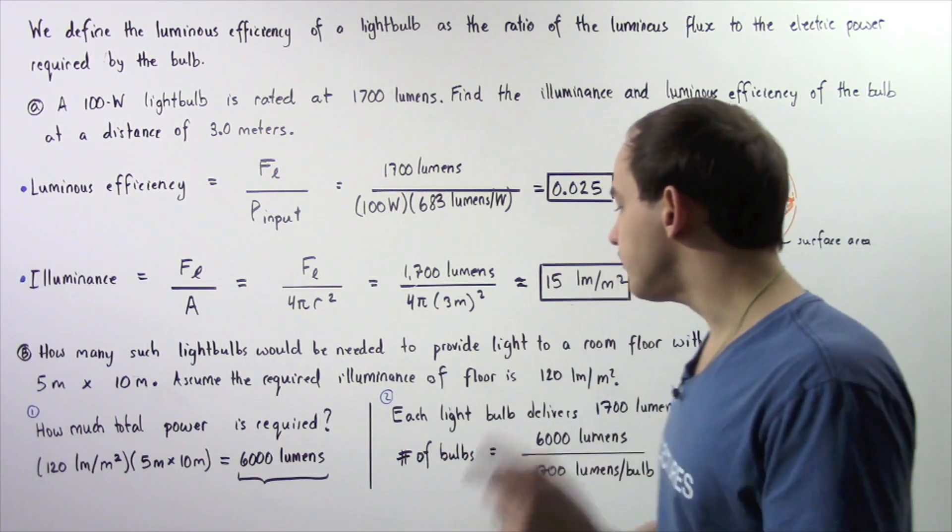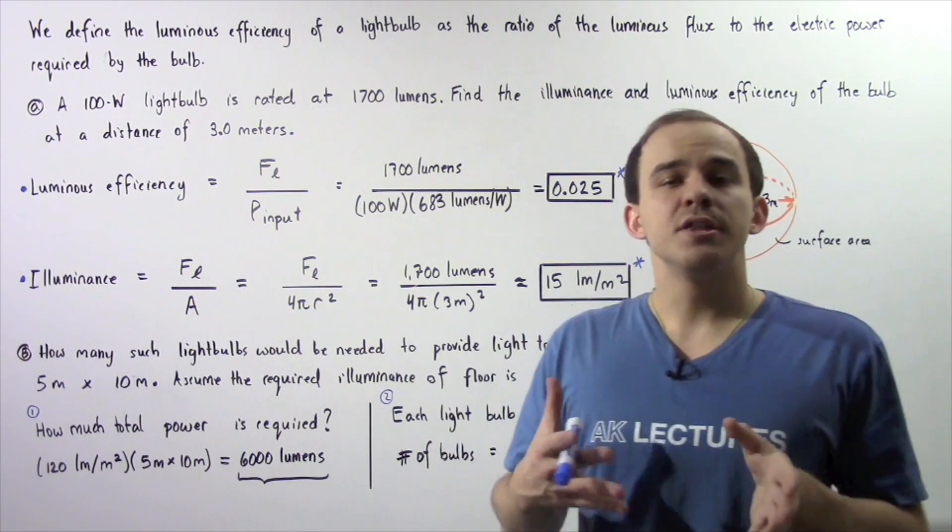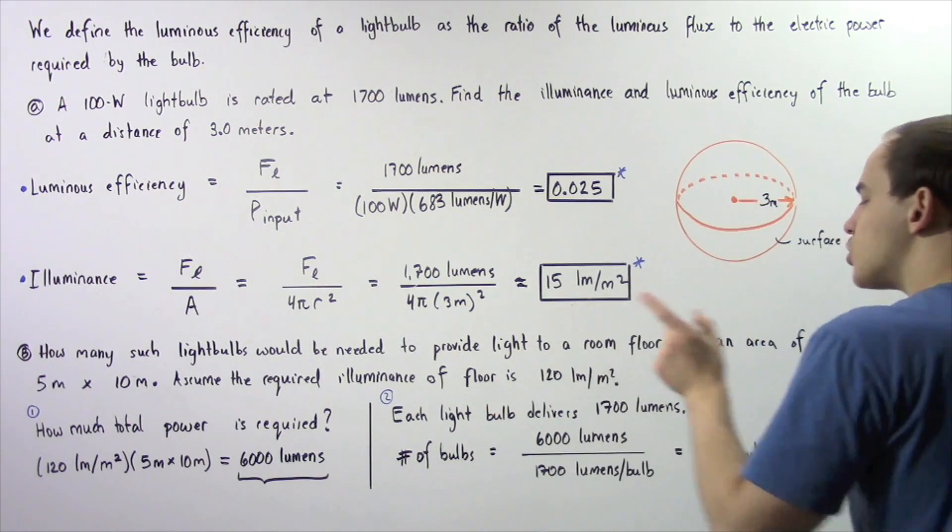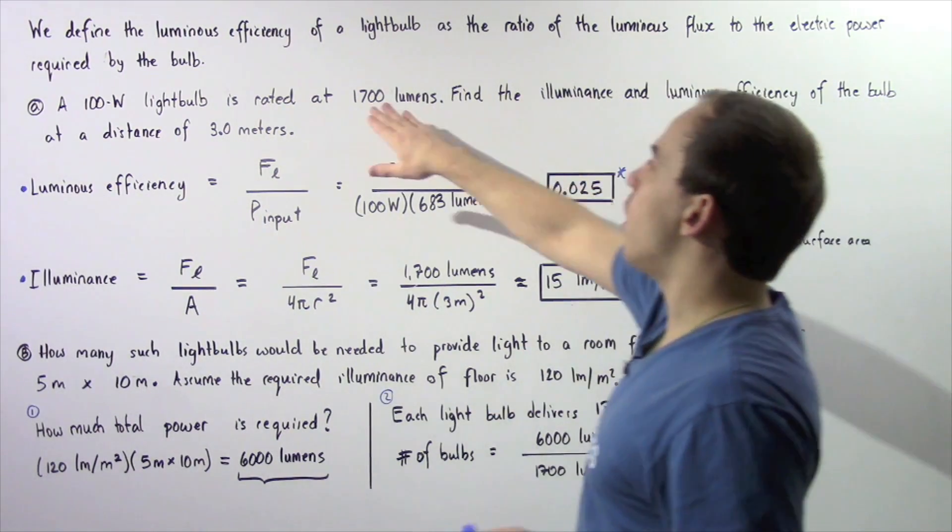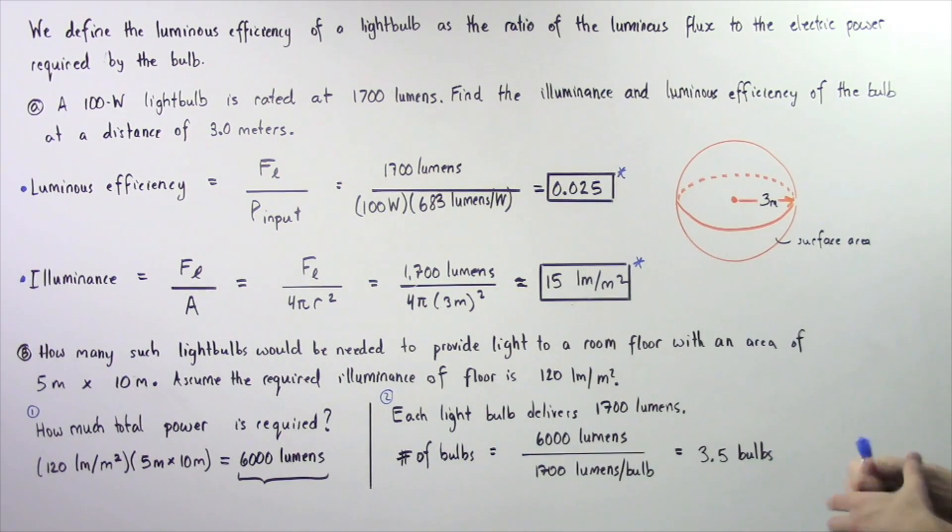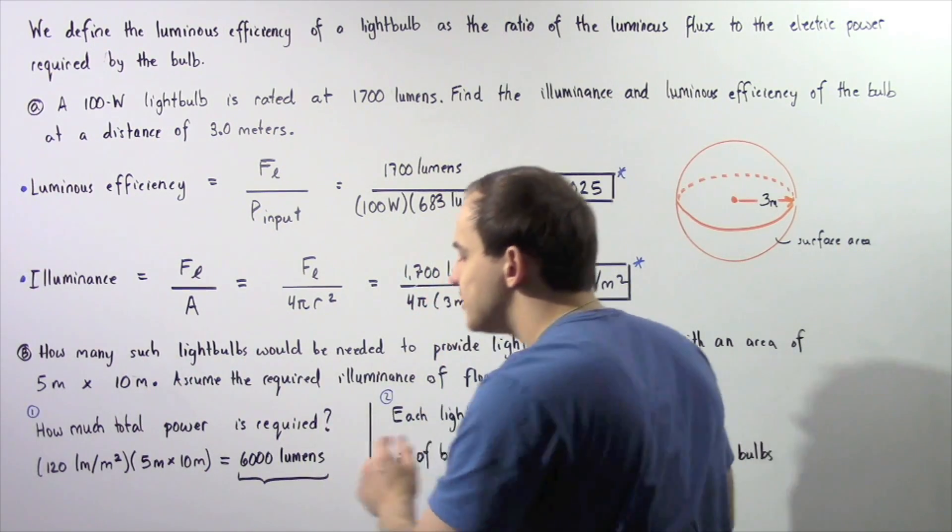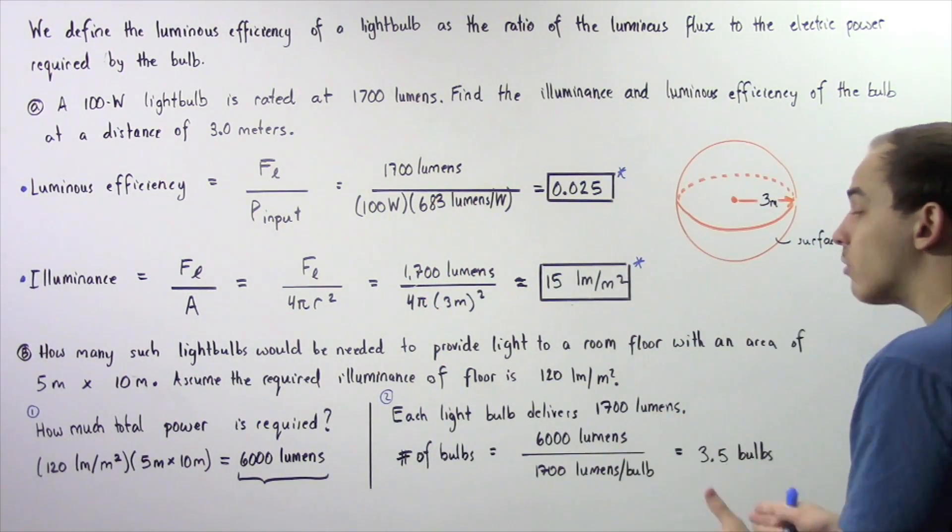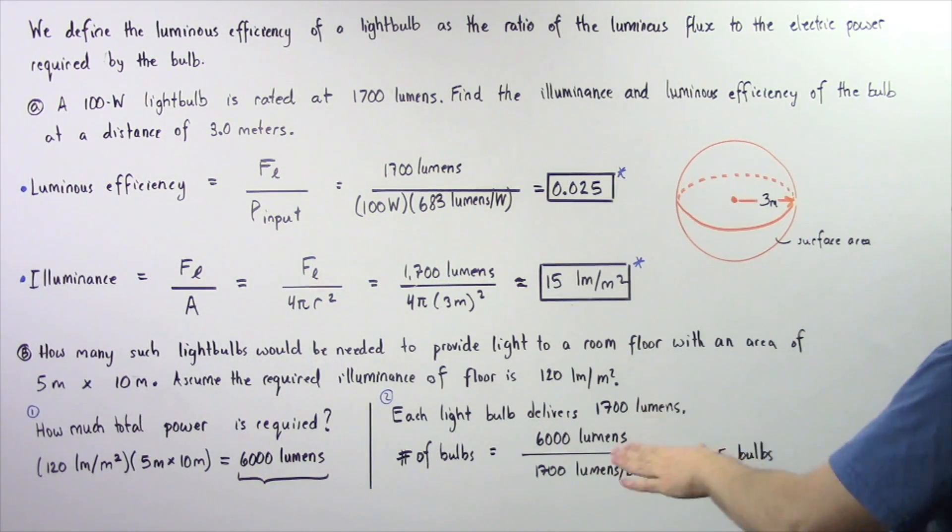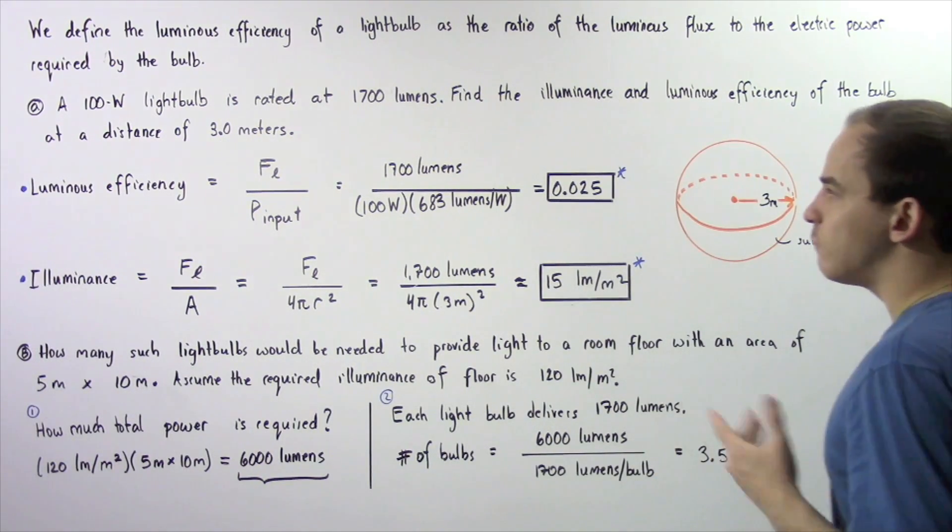Now in the second step we want to calculate the number of light bulbs required. We know from part A that each light bulb delivers 1700 lumens. So to calculate the number of light bulbs we take the total power in lumens and divide by the power delivered by each bulb. So 6000 lumens divided by 1700 lumens per bulb gives us about 3.5 bulbs.